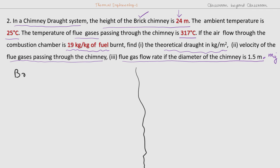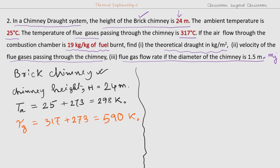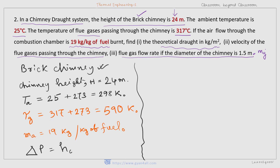The given data: brick chimney — the material of the chimney is brick, which is important. Chimney height H is 24 meters. Ambient air temperature Ta is 25 degrees centigrade or 298 Kelvin. Temperature of the flue gas inside the chimney is 317 degrees centigrade or 590 Kelvin. Ma mass flow rate is given as 19 kg per kg of fuel burnt. First, we'll determine the theoretical drought in kg per meter squared — that means delta P or Hw in kg per meter squared, which is the same as millimeter of water.